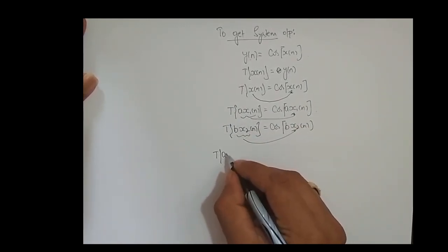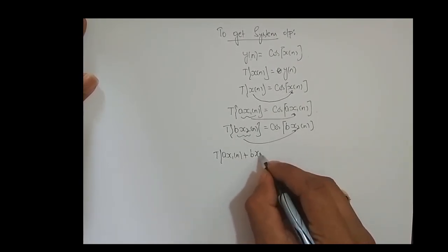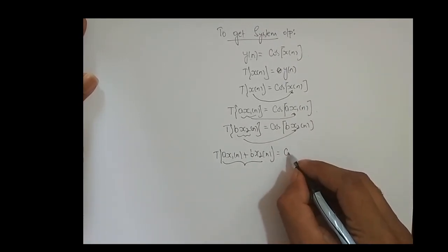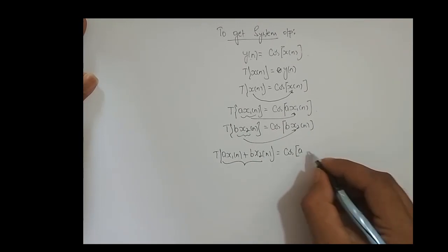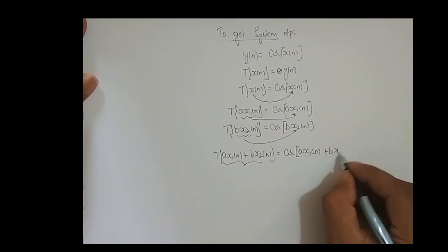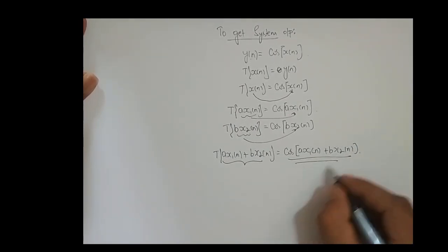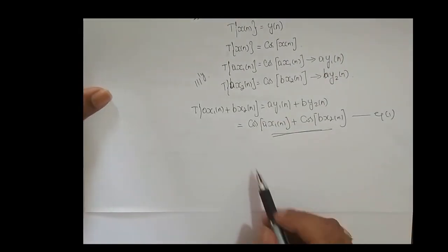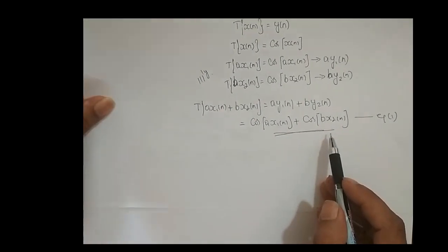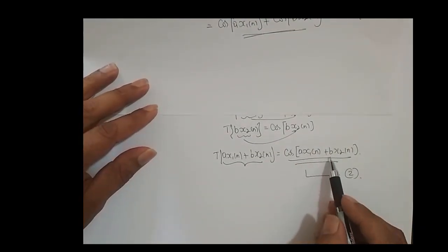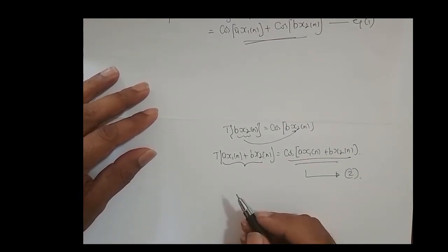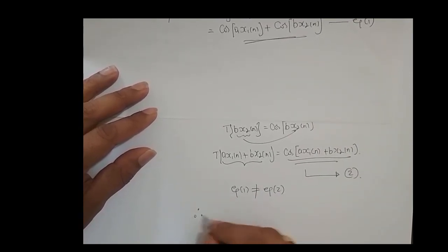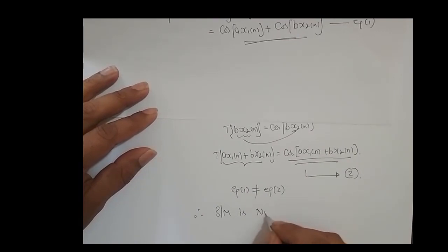Now if I combine it: transformation of a times x1 of n plus b times x2 of n — as a whole this is one signal — the output is cos of a times x1 of n plus b times x2 of n. This is the system output. The desired output was cos of a times x1 of n plus cos of b times x2 of n, but the system output is cos of the entire quantity a times x1 of n plus b times x2 of n. Since Equation 1 is not equal to Equation 2, therefore the system is non-linear.